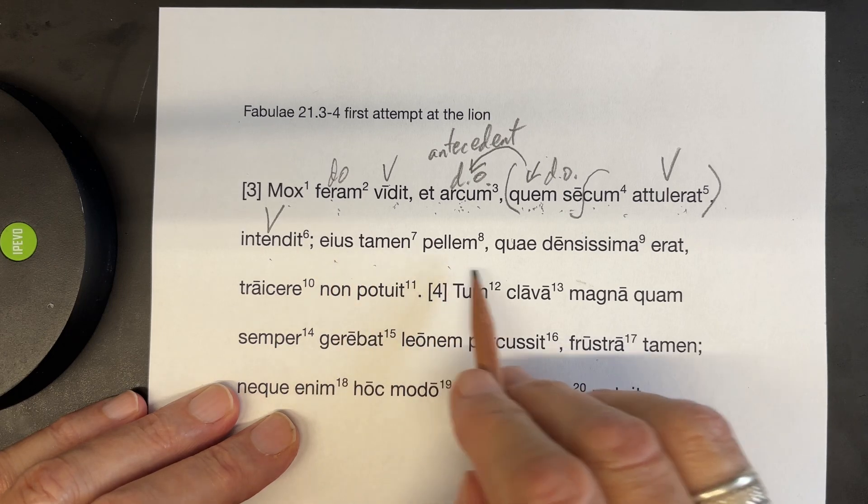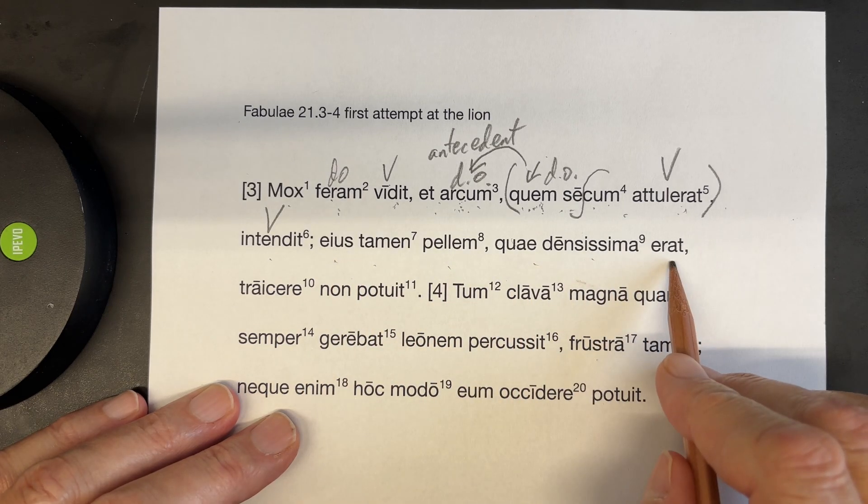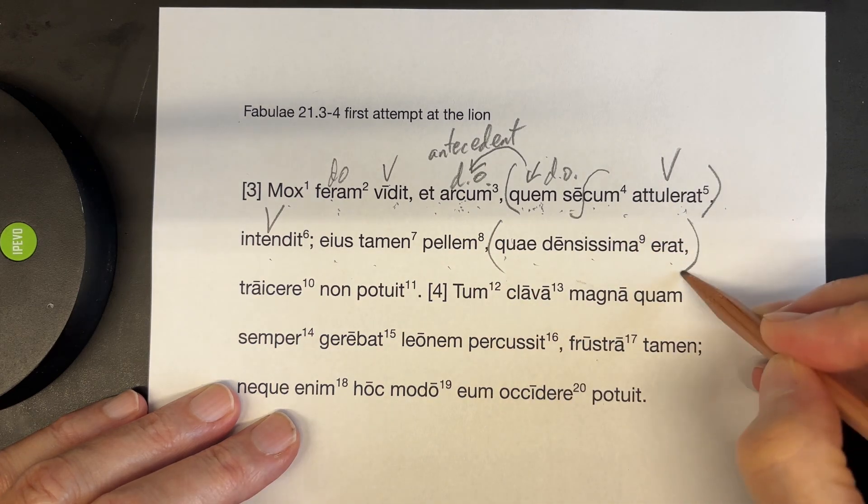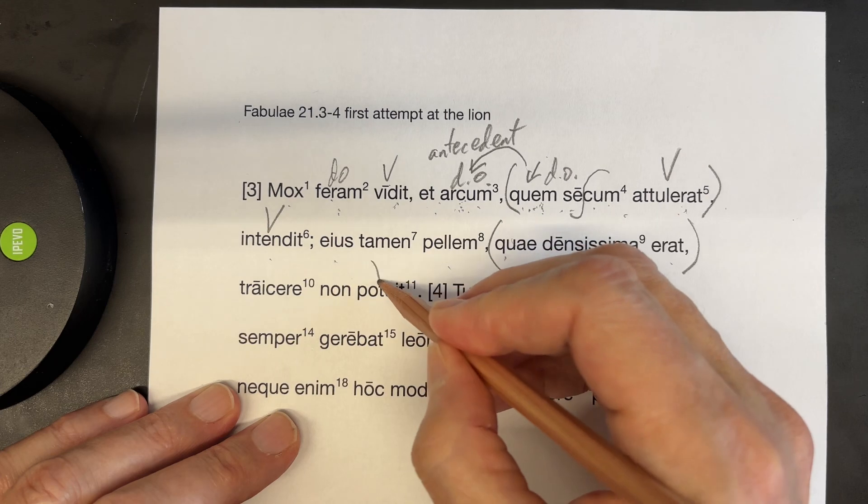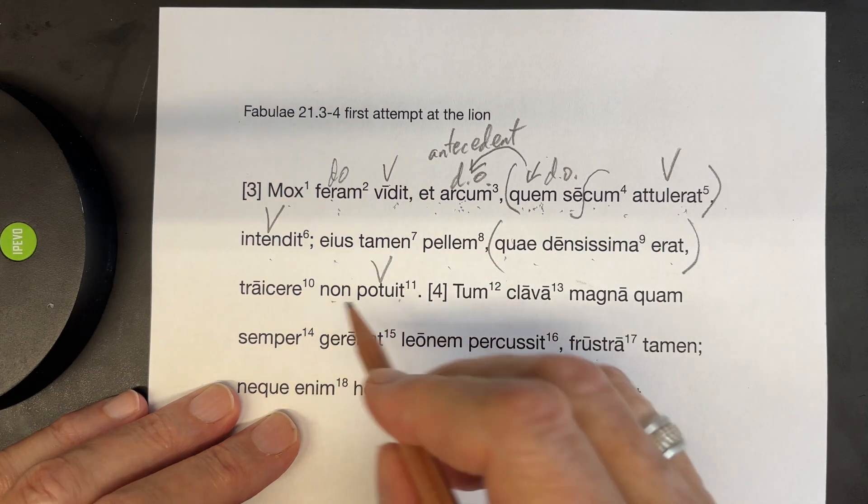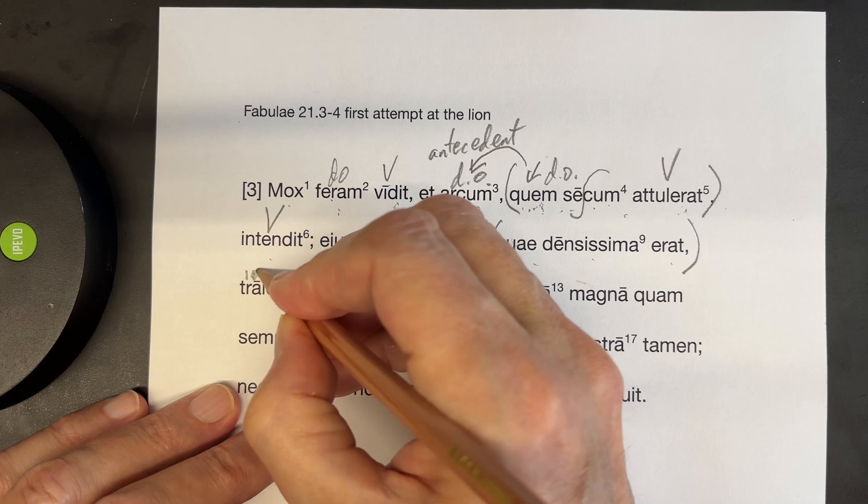Eistam and pelum. Qua densissima erat. Here's another relative. This is like a whole lesson on the relative pronoun. And here's your main verb here.